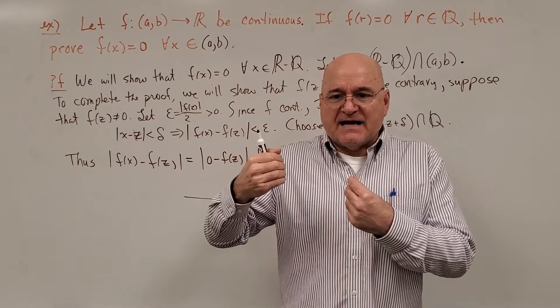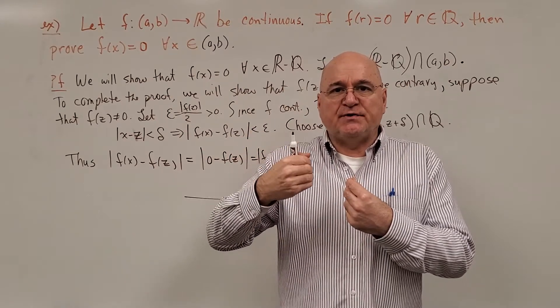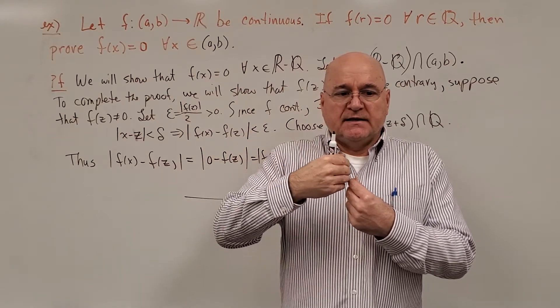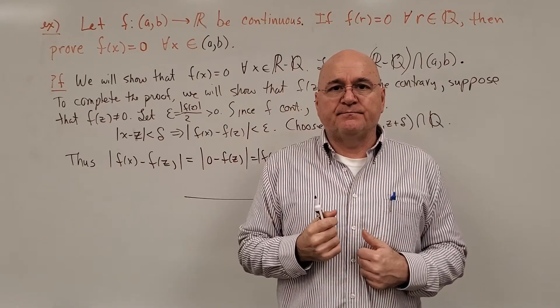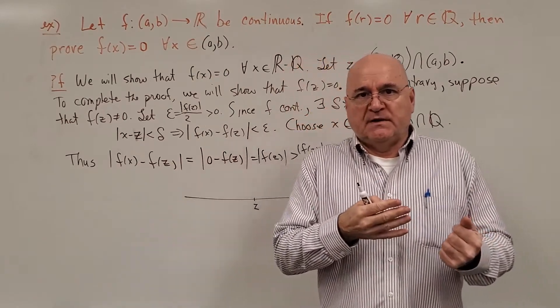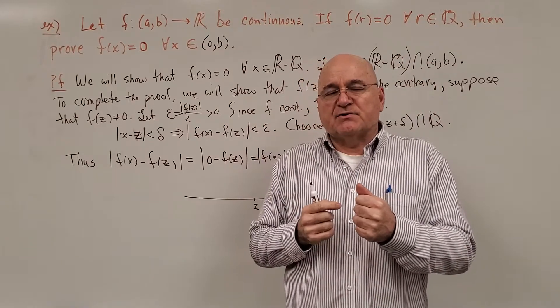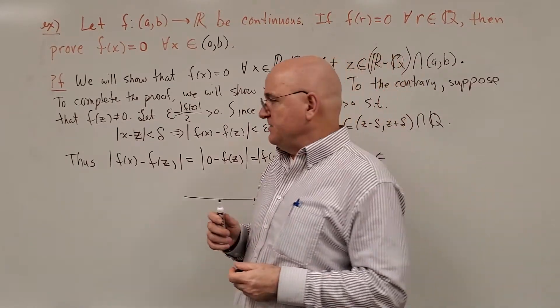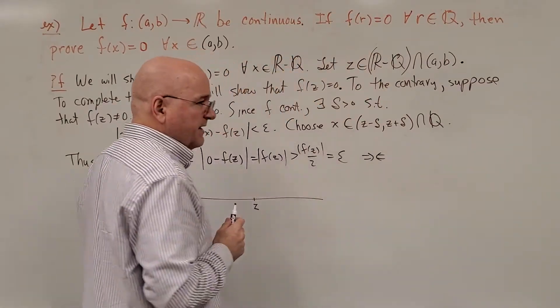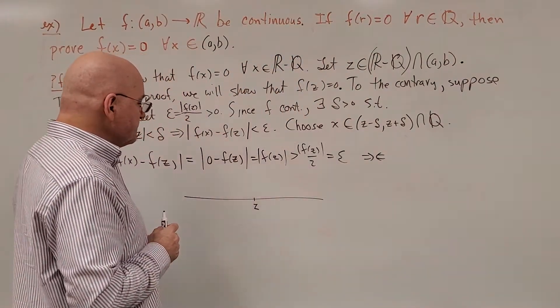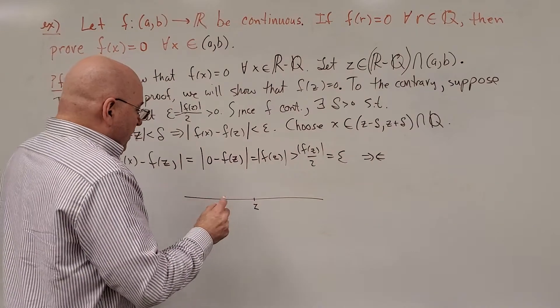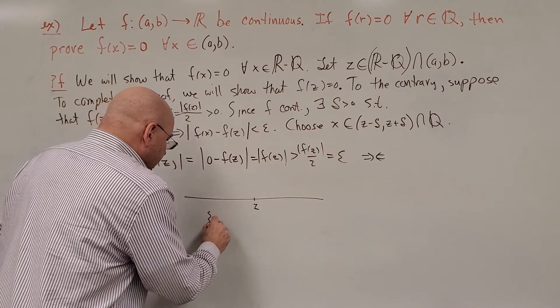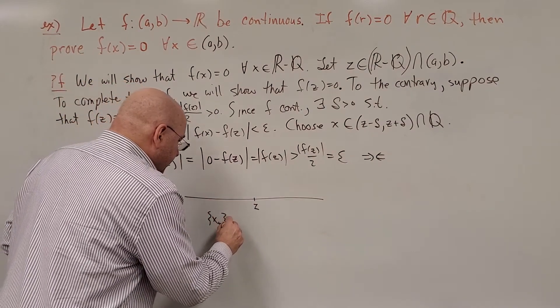there is a sequence of rational numbers whose limit is that number. So even √2, there is a sequence of rational numbers whose limit is √2. I think we proved that back in chapter 1 or 2. So we could have said let x_n